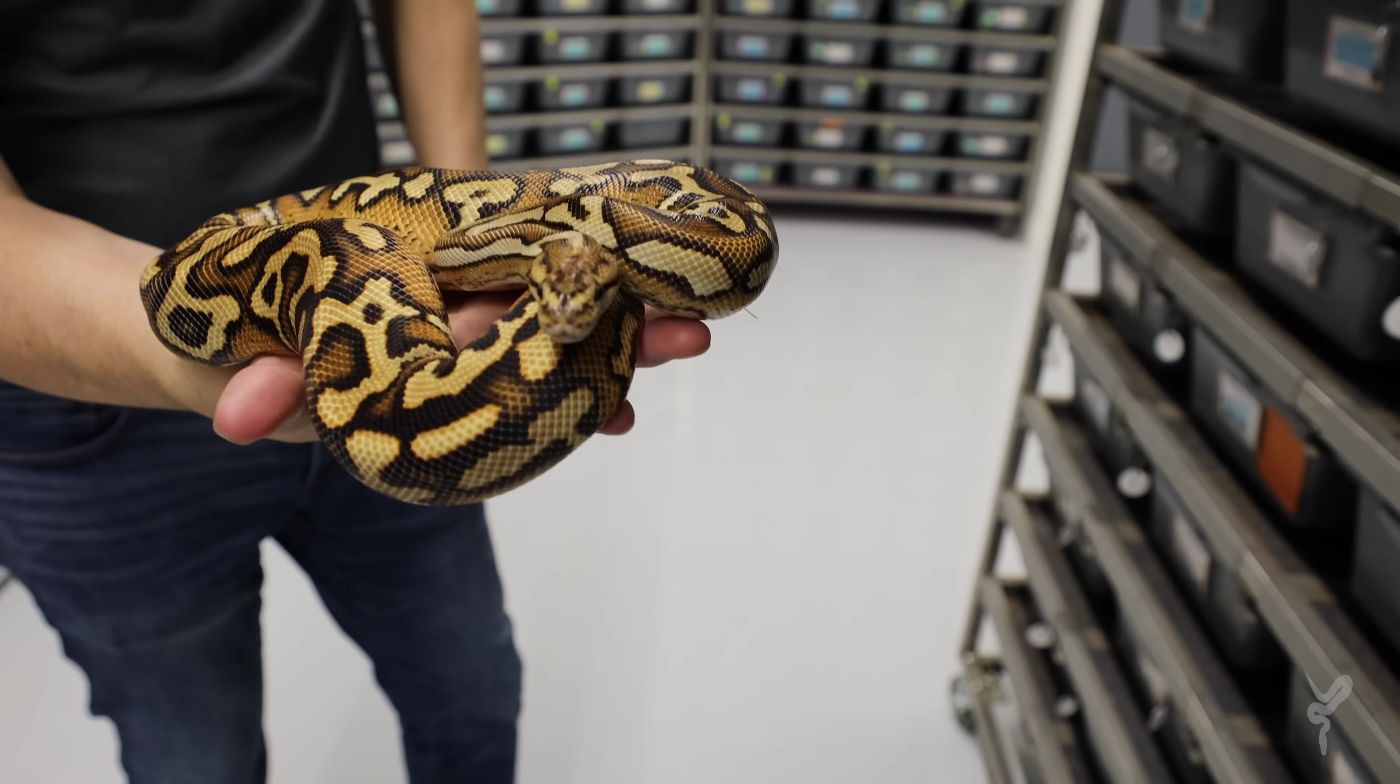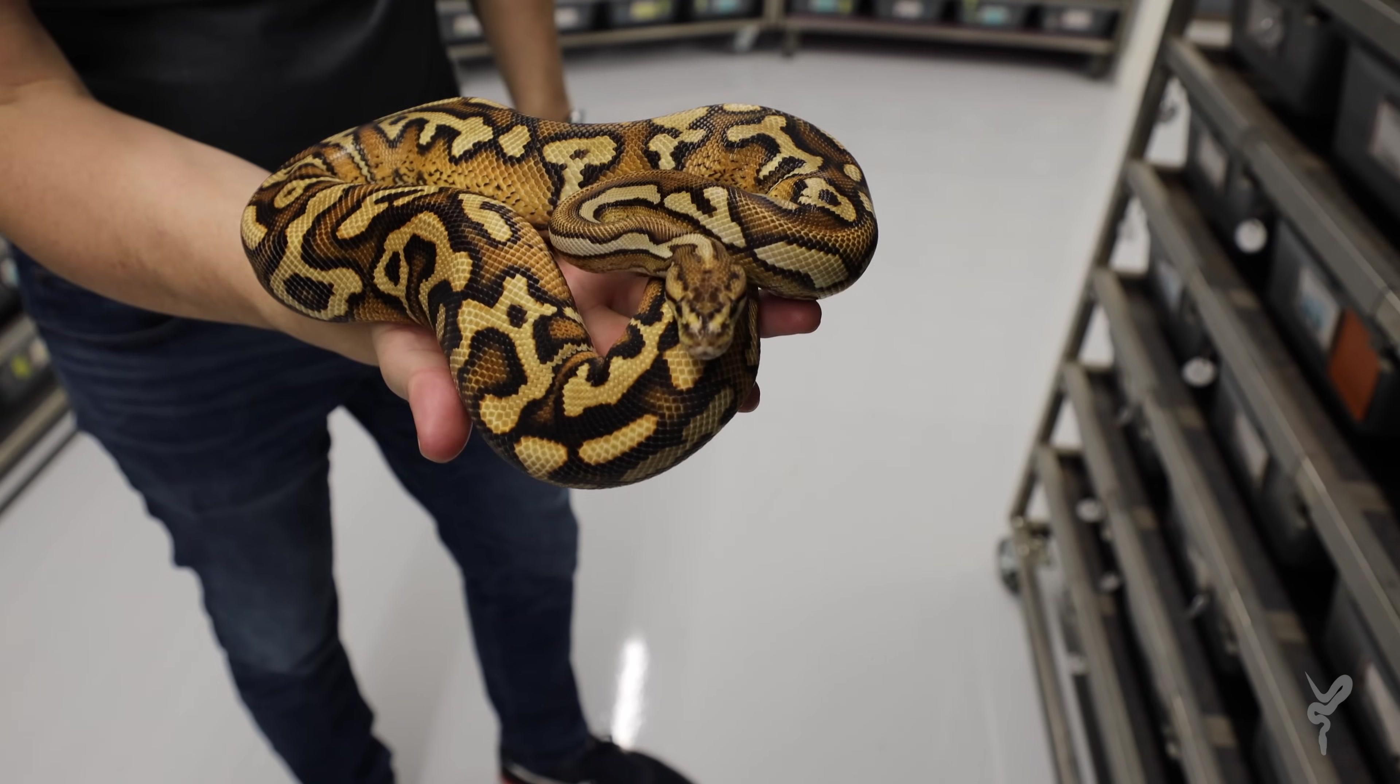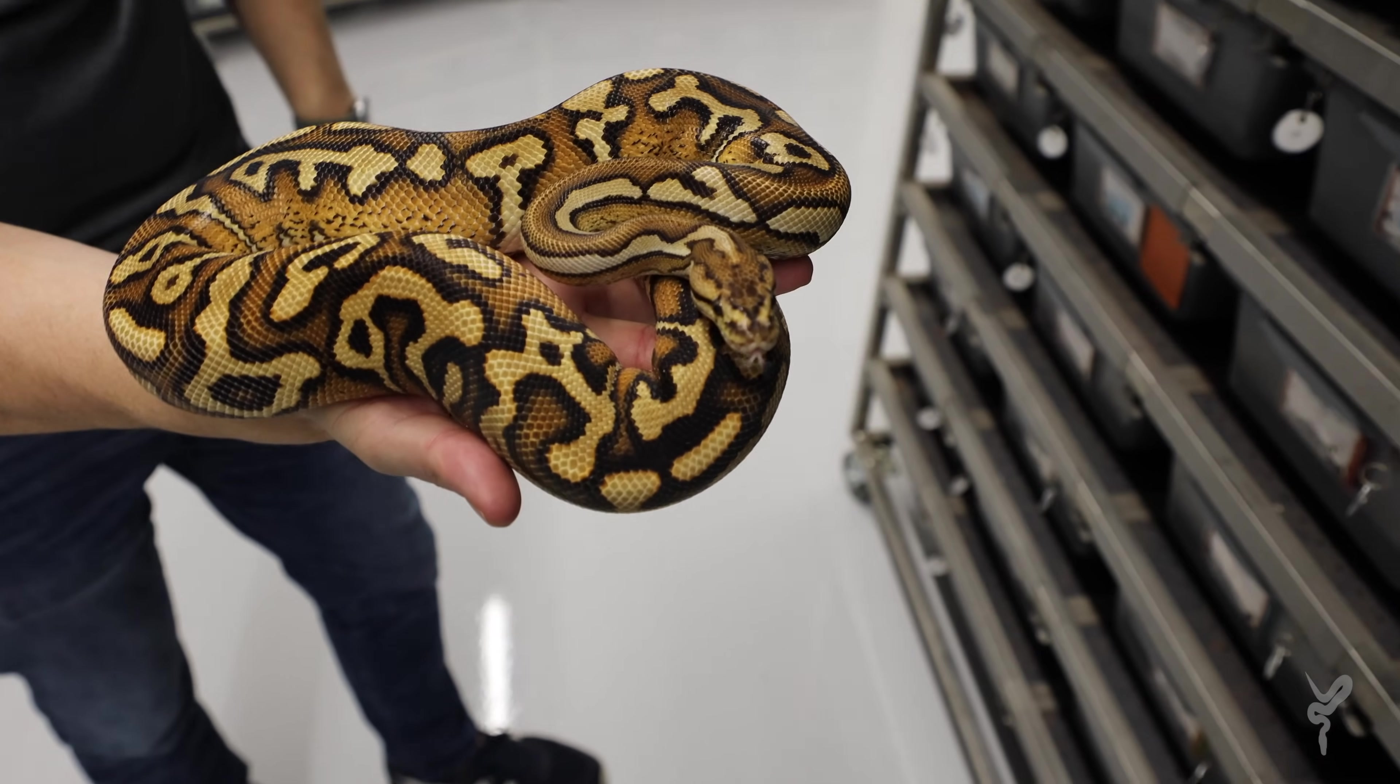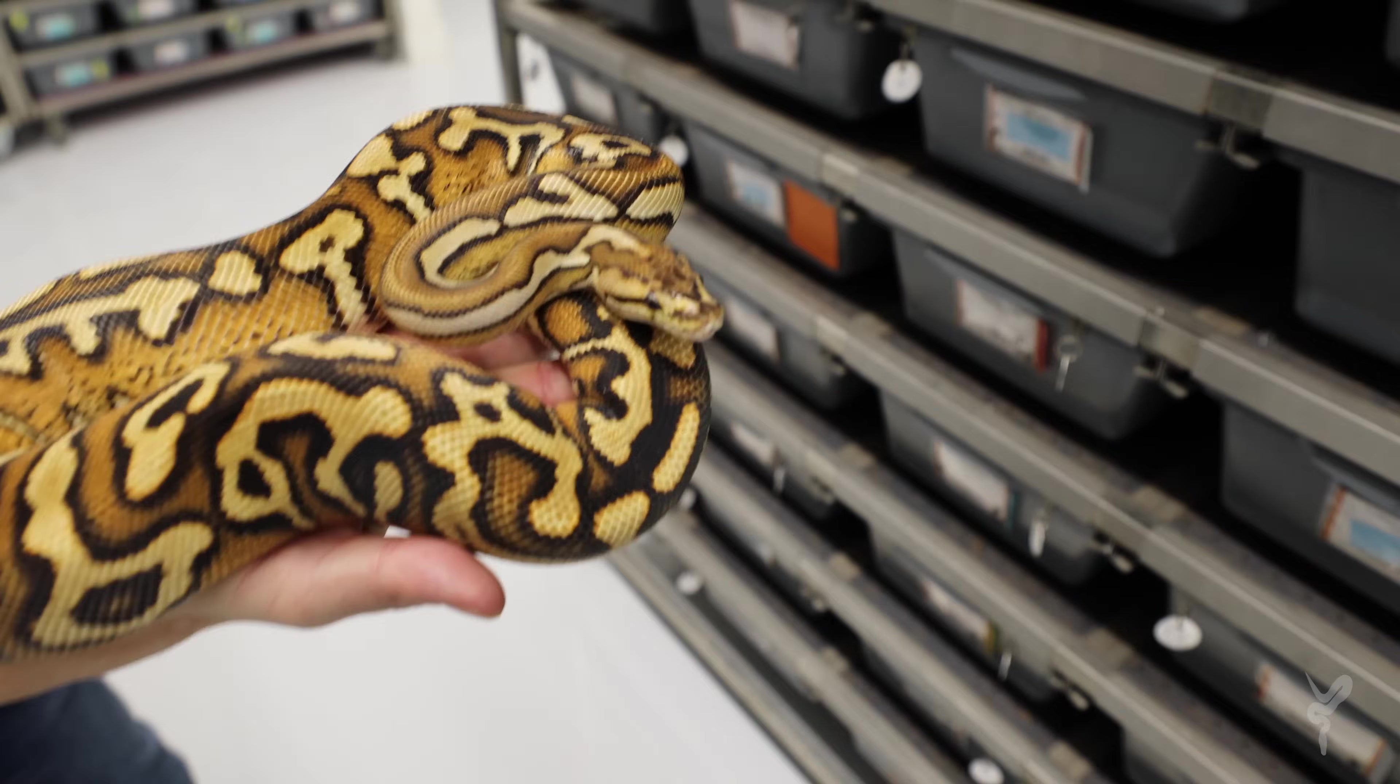That's crypton, black pastel, spot nose, yellow belly, red stripe. Isn't that amazing? That is crazy.